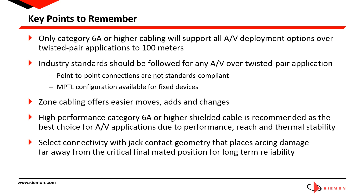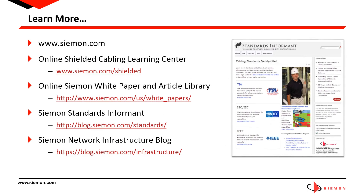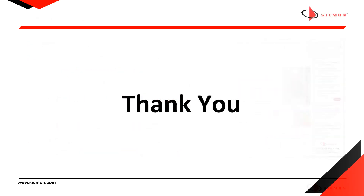High-performance Category 6A or higher shielded cable is recommended as the best choice for AV applications due to its 10-gigabit-per-second capability for transmission performance, full 100-meter reach, and thermal stability when operating using remote powered applications such as PoE or Power over HDBaseT. Finally, select connectivity that has jack contact geometry that places the arcing damage away from the critical mated position for long-term reliability — as illustrated on the previous slide, this is something inherently incorporated into Siemens MAX, ZMAX, and Terra jacks. Siemens has a number of resources available to learn more about the topics discussed today and to keep current on industry and associated industry standards, all found at www.siemens.com. That wraps up this session and I want to thank you for the time and the opportunity to present today. I hope this information will prove helpful as the AV industry navigates its way towards future IP convergence.